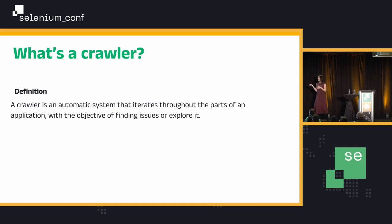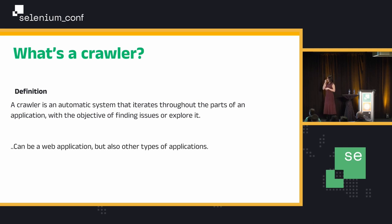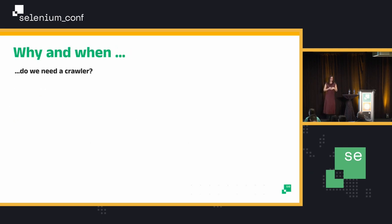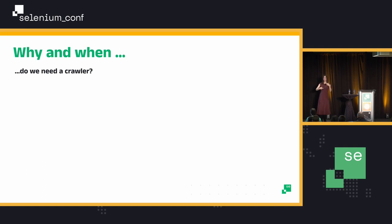So what's a crawler? A crawler is an automatic system that iterates through an application, basically. The objective is to find issues — we're at a testing conference, right? It could be a web application, but it can also be other types of applications. Why would we need a crawler? Anyone have suggestions? Why can we use some application that will go through my application and grab issues? For accessibility — that could be one of the things.